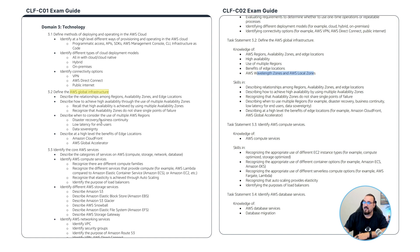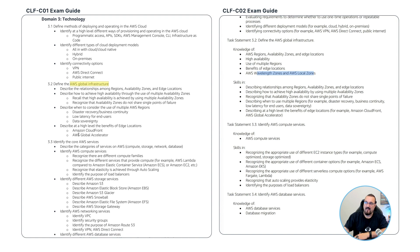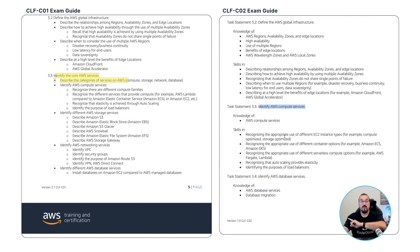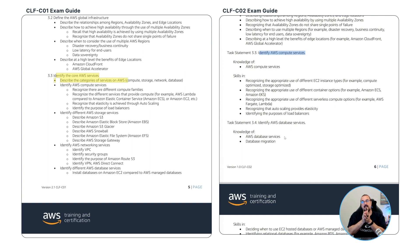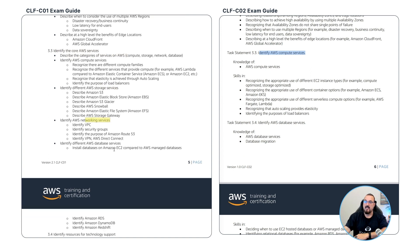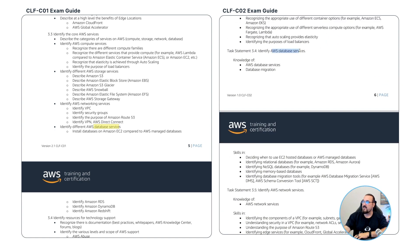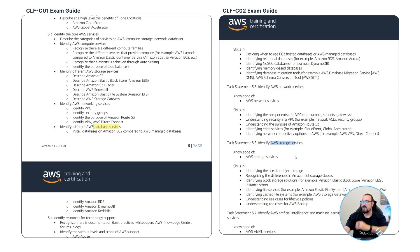Edge zones and benefits of edge locations — already there, even in the old one, along with global accelerator. Task statement 3.3 identifies compute services. What's interesting is that CLF-01 was broadly saying 'describe a bunch of different services,' whereas CLF-02 is now explicit: compute services task statement, database services task statement, network services task statement, and storage services task statement — which was always how it was scoped, just now stated explicitly.